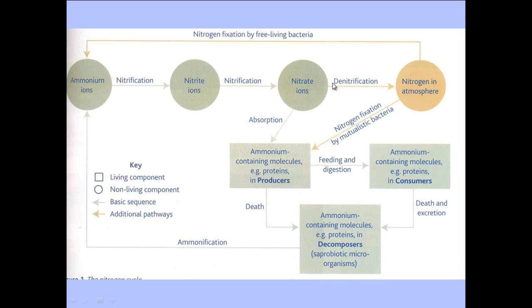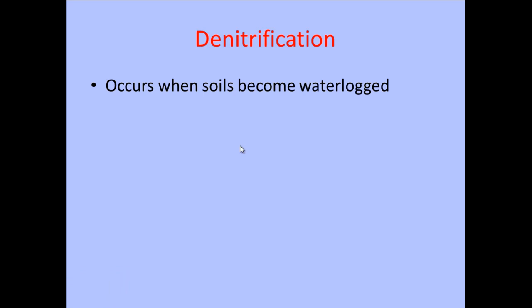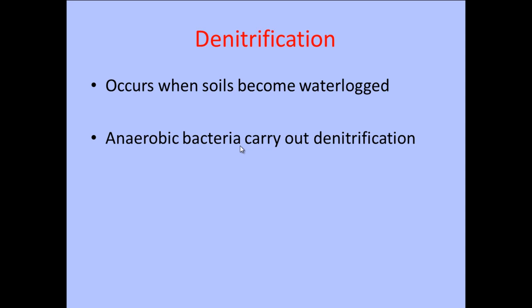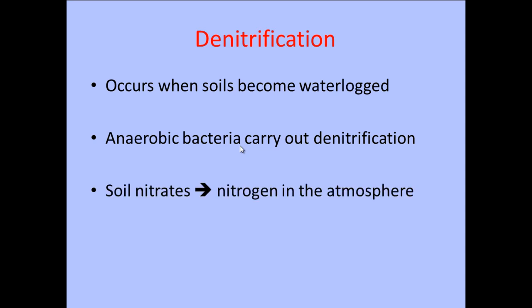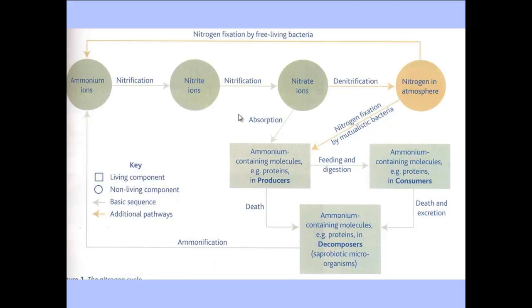After nitrate ions are reached and some are absorbed into plants via active transport, the next process is called denitrification. This is carried out by denitrifying bacteria. Whereas nitrification was oxidation, denitrification is reduction. Denitrification occurs when the soil becomes waterlogged, with no oxygen present, allowing anaerobic bacteria to convert soil nitrates into nitrogen in the atmosphere. Nitrate ions have the formula NO3, and nitrogen in the atmosphere has the formula NO2.